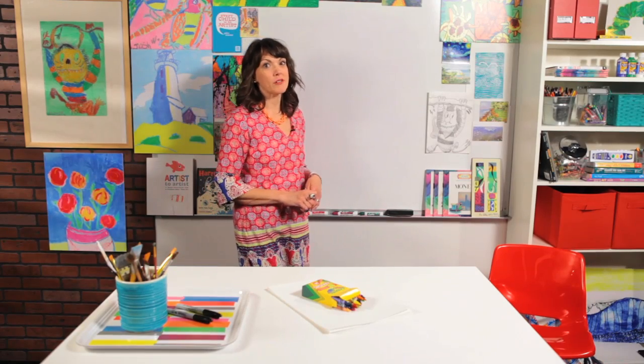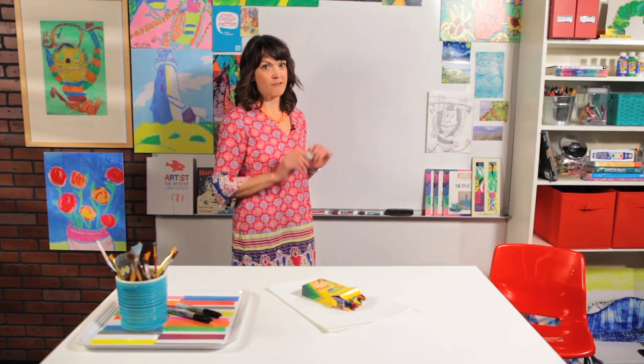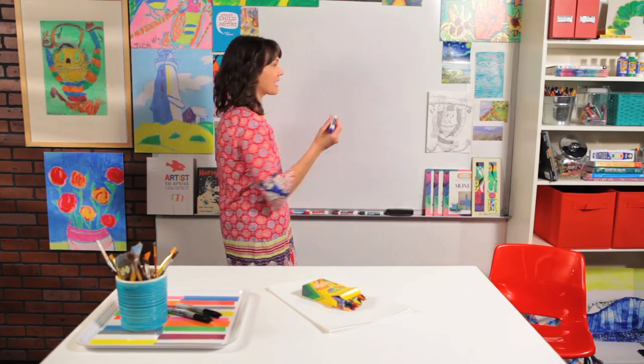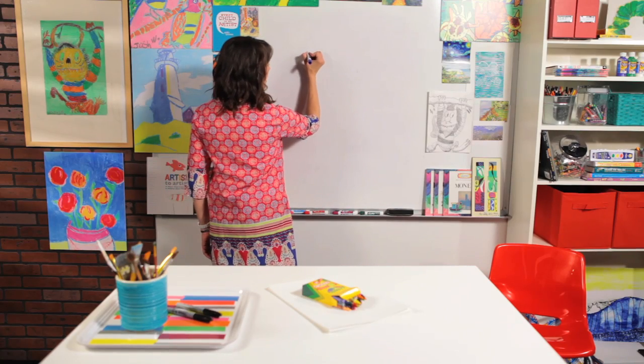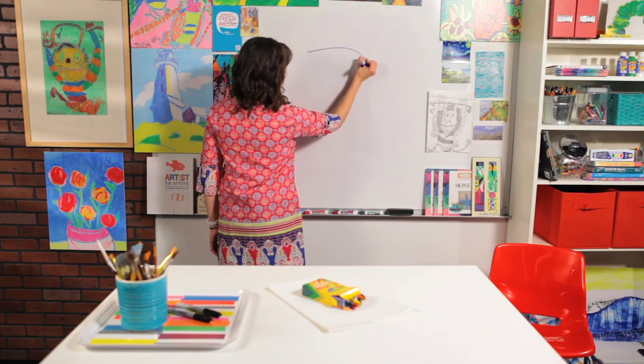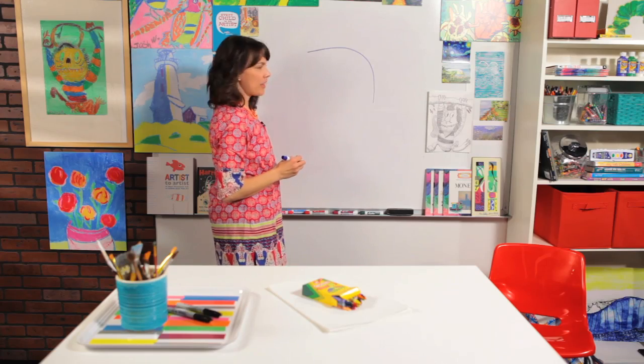For an elephant we're going to be using a lot of curved lines and the first line we're going to do is his back. Let's draw a big curved line starting right here and down like that. We'll stop right there.